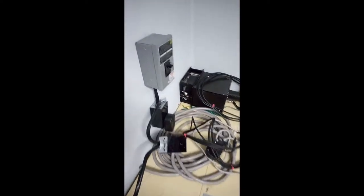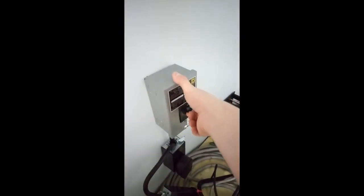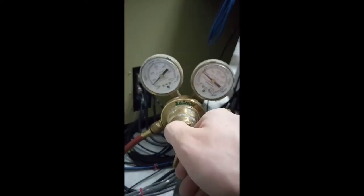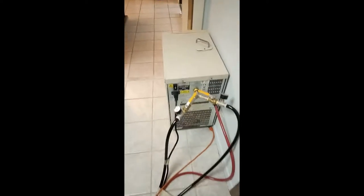So for the start-up procedure, first we turn the box on the wall on. Then we turn this switch on the power supply on. We make sure our gas is set at the correct pressure. This part is going to make a little bit of noise, but eventually it calms down.